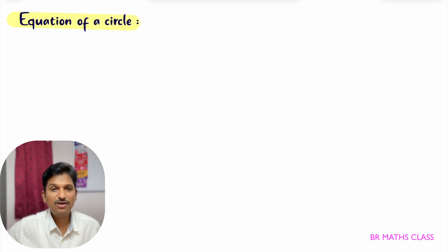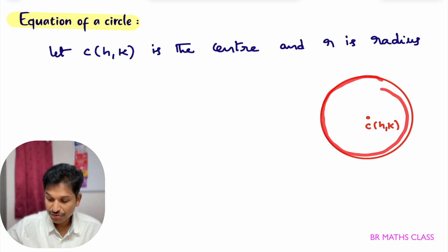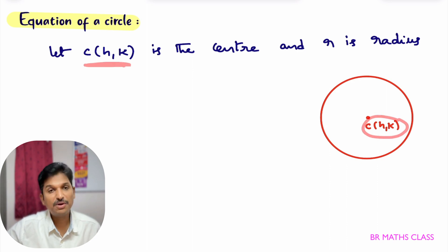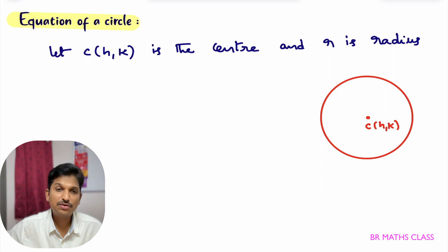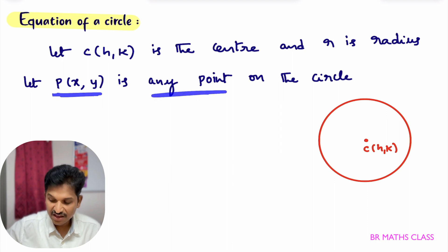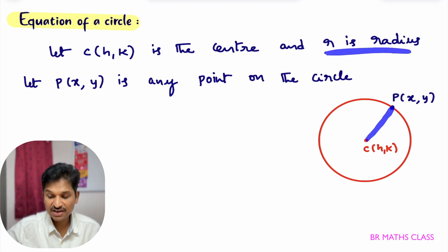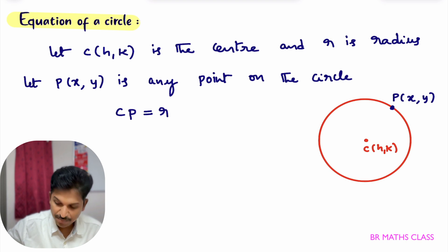We are deriving the equation of a circle. To derive it, we need the center and radius. I consider a circle whose center is (h, k) and radius is r. On this circle, infinitely many points exist. I take any point P(x, y) on the circle. The distance from center C to point P equals the radius r, so CP = r.